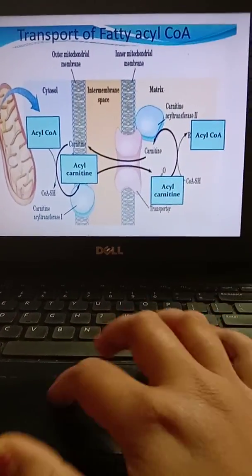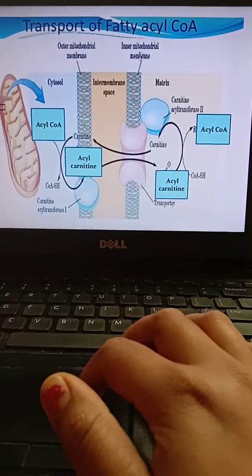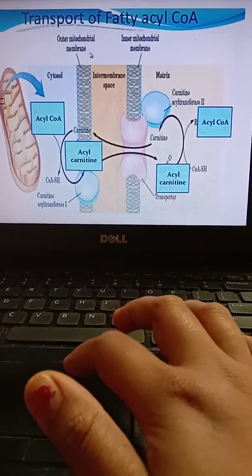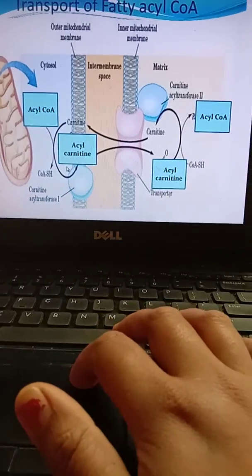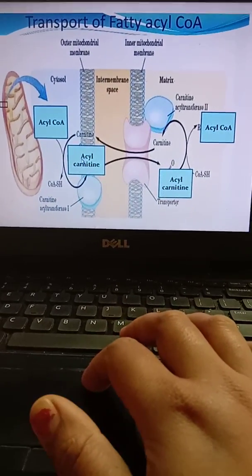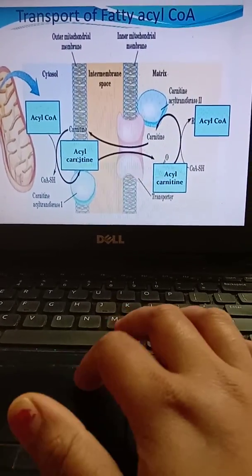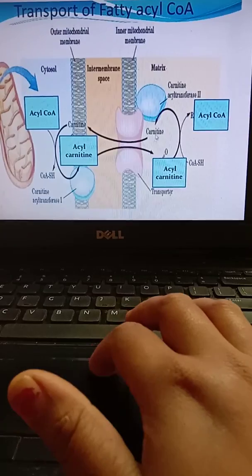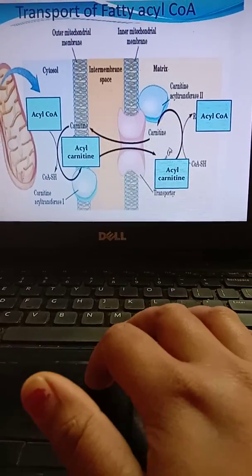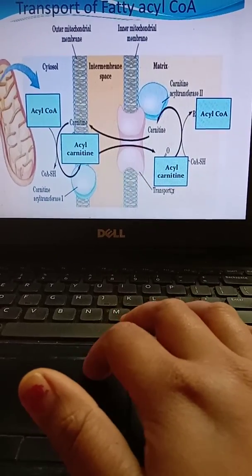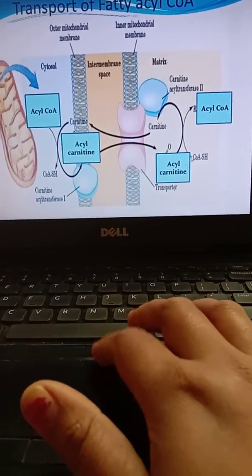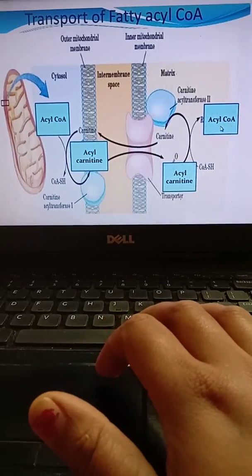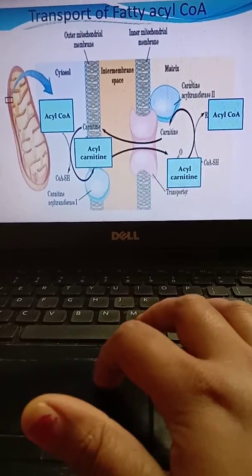This is the inter-mitochondrial membrane and this is the outer mitochondrial membrane. Acyl-carnitine helps the acyl-CoA enter into the mitochondria. Carnitine and acyl-CoA are combined, and they liberate the acyl-CoA into the matrix of the mitochondria.